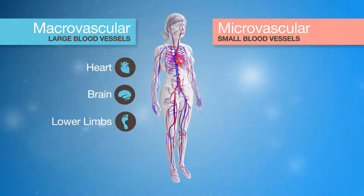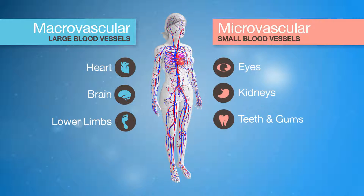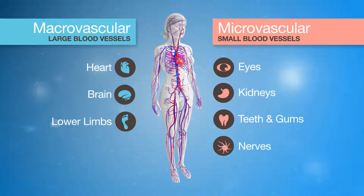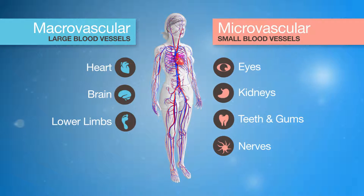Damage to the small blood vessels can affect the eyes, kidneys, teeth, gums and nerves. Nerve damage can start to affect the digestive system, sexual organs and the feet.